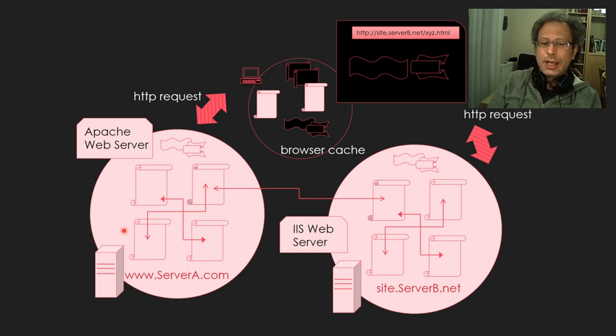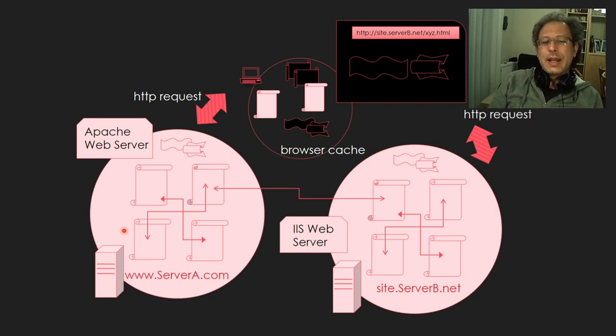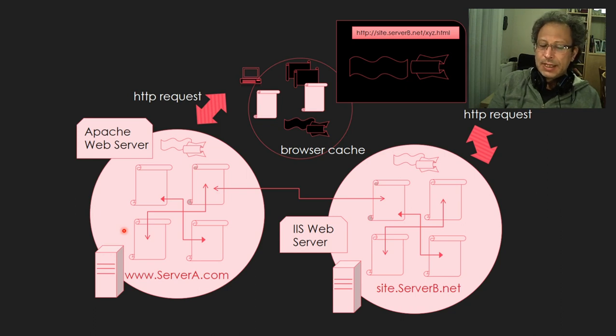There are also links to other websites. The computers serving these web pages are called web servers. Different types of software run on those computers — for example, Microsoft's Internet Information Server, and the most popular web server application is Apache. This is briefly how the World Wide Web works. It's based on the internet, which is another technology, but you don't need to understand all the engineering details to design websites.